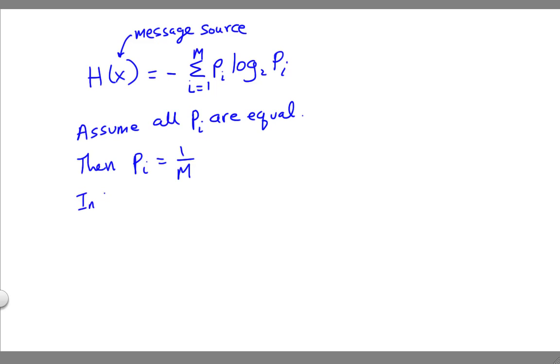So in that case, H(x) is going to be minus the sum from i equals 1 to m of p sub i is 1 over m times the log base 2 of 1 over m. And if we sum up this m times, it's just going to be this plus this plus this m times. That's going to get rid of the 1 over m term. So that's going to be equal to minus the log base 2 of 1 over m.